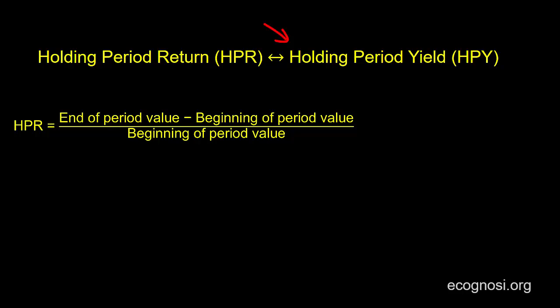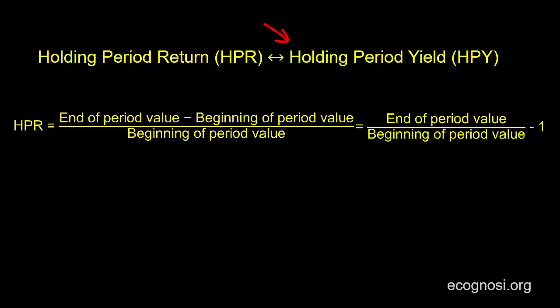The beginning of period value is the price you pay when you purchase the security. So the holding period return is simply the percentage change in the value of your investment from one point in time to the next, and the length of time between the two points is the period you hold your investment. If we were to manipulate this a bit, we would get end of period value over beginning of period value minus one.